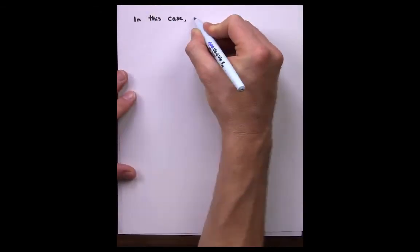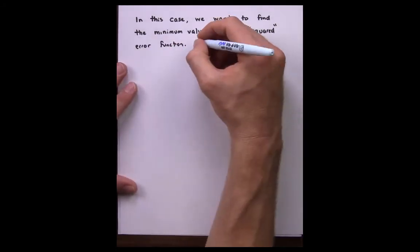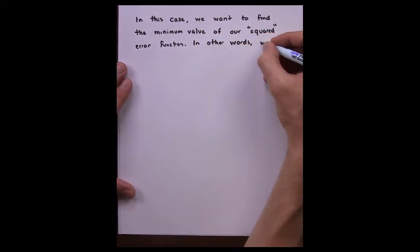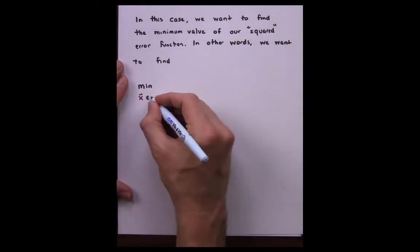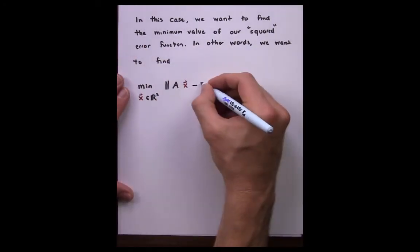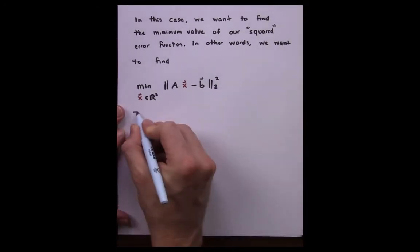We want to find the minimum value of our squared error function. In other words, we want to find the minimum over all X in R^2 of the 2-norm of AX minus B squared.